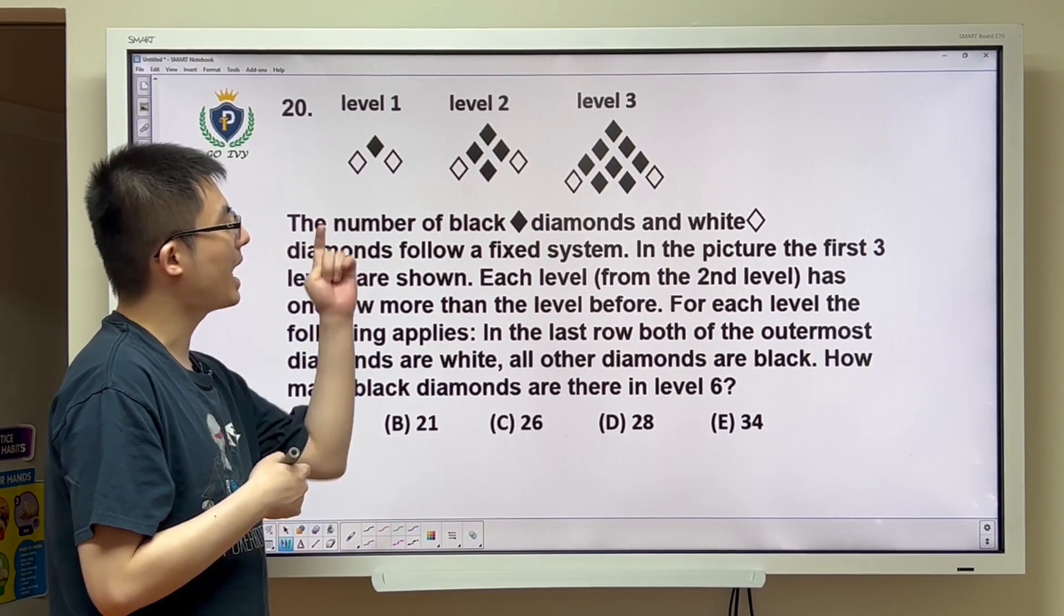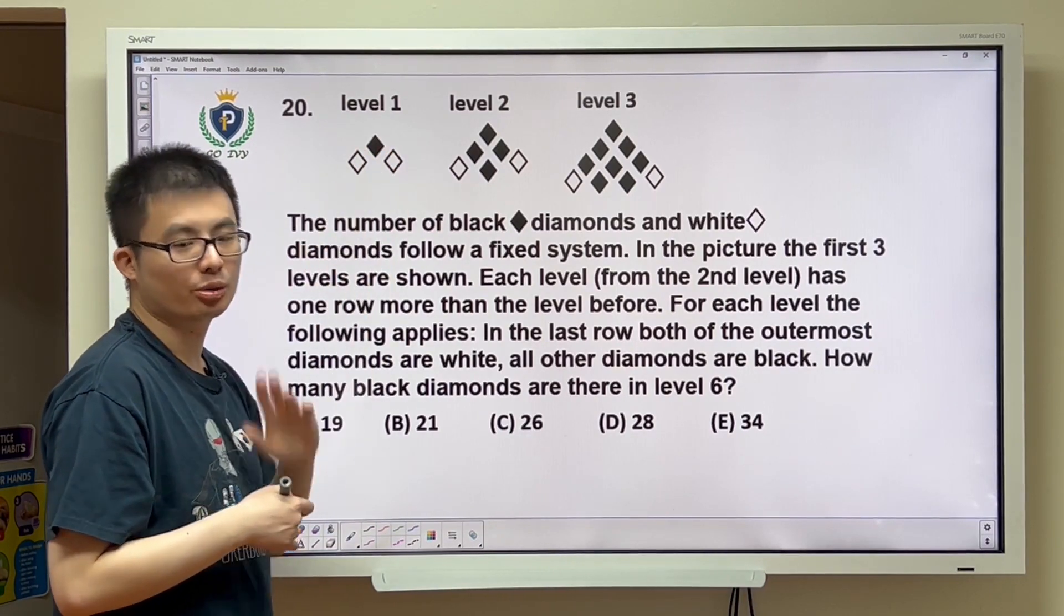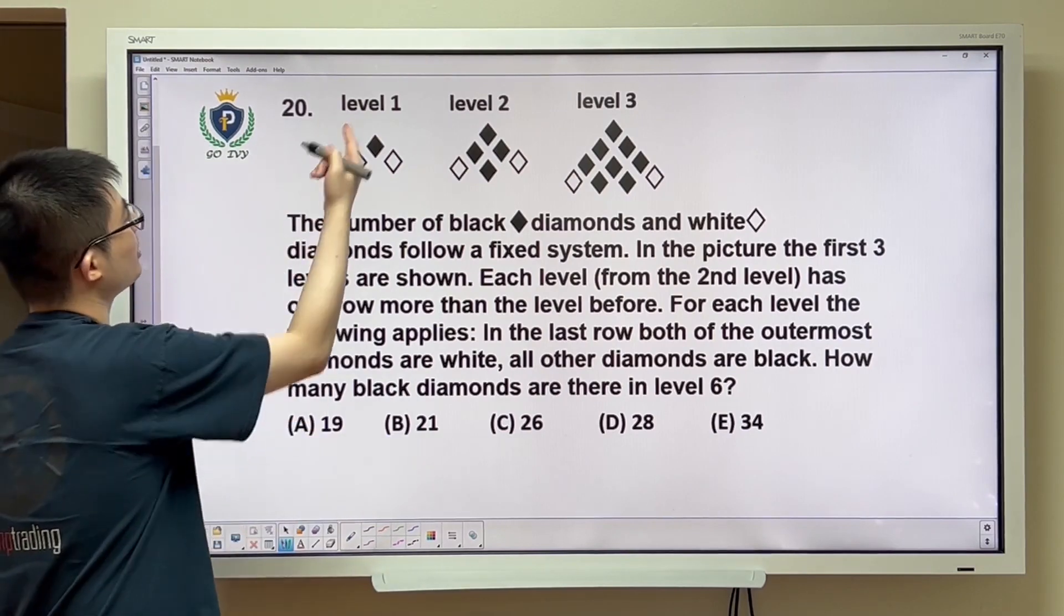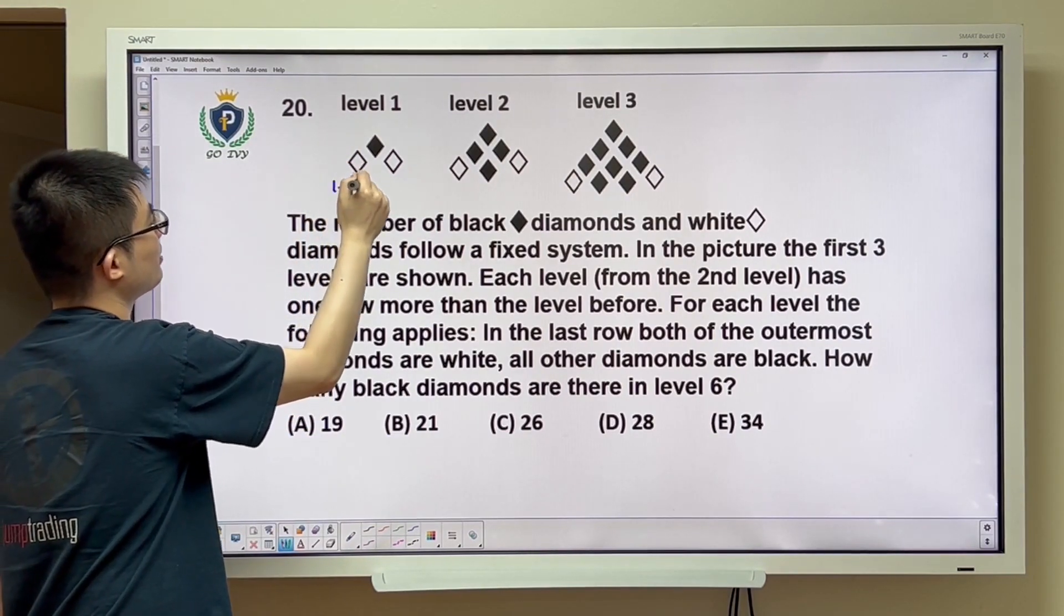We notice that there's a pattern regarding the total number of diamonds. In the first one, it's going to be 1 plus 2.